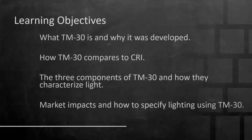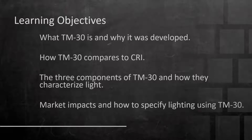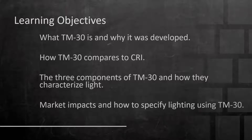So what are our learning objectives today? First, what is TM-30 and why was it developed? We've all used CRI for a long time for specification and selection. Second, comparisons between TM-30 and CRI. Third, the three components of TM-30 — because CRI is a single metric while TM-30 has three components. And last, market impacts: how to specify and select lighting using the TM-30 standard.